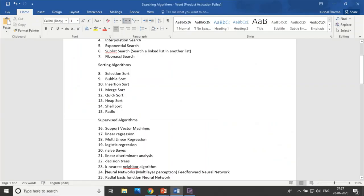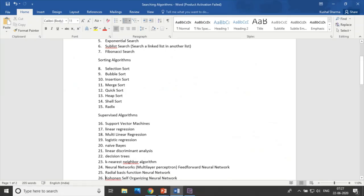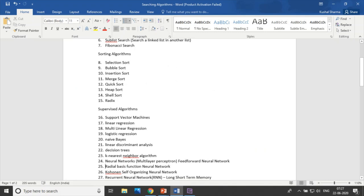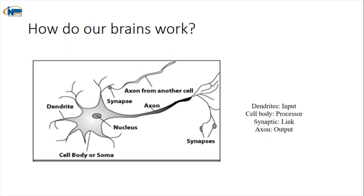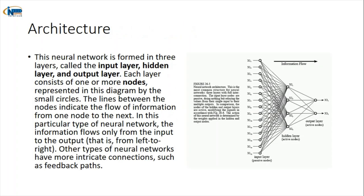Next we have neural networks — algorithms 24 through 29. Neural networks work on human neurons: a neuron has dendrites, nucleus, synapse, and axon which send information to other cells. The architecture has an input layer, hidden layers, and an output layer. There can be multiple hidden layers. We will see different types of neural networks.